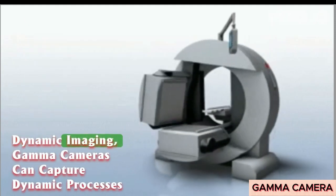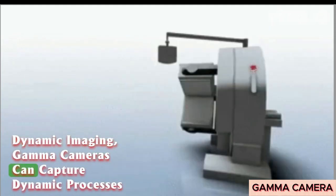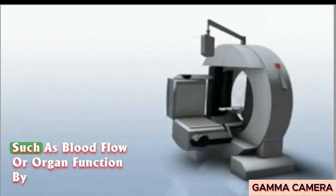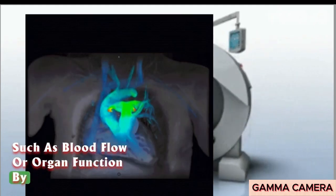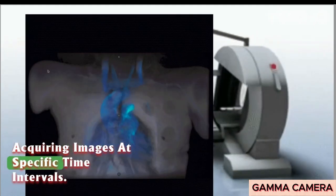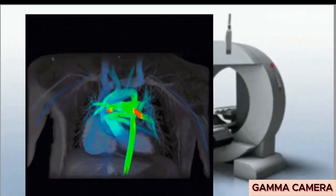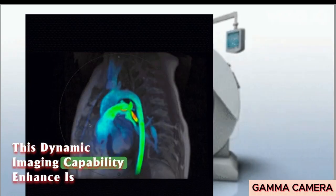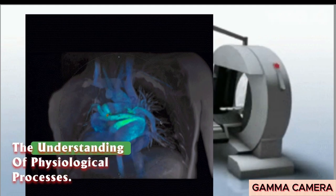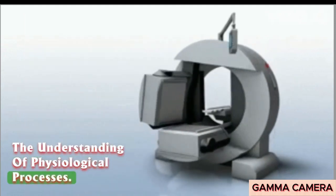Dynamic imaging: Gamma cameras can capture dynamic processes such as blood flow or organ function by acquiring images at specific time intervals. This dynamic imaging capability enhances the understanding of physiological processes.